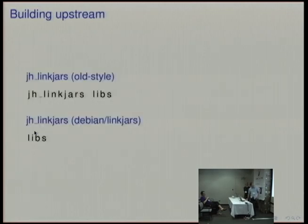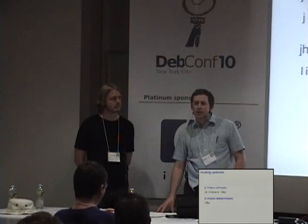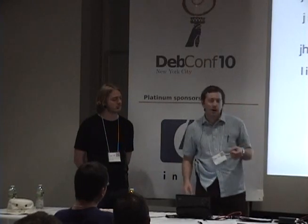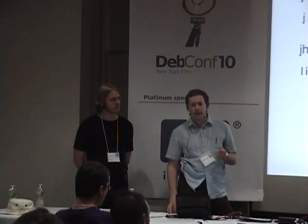The first is jhlinkjars. This basically looks through your list of build dependencies, finds all of the jars contained within them, and symlinks them into the directory where upstream's build system expects to find them. This may give you some extra jars linked in, but hopefully the upstream's build system will ignore any it's not using. You can do this in the normal deb helper style by putting a file in the Debian directory mentioning where you'd like them linked. Java Helper also has a clean command which will automatically remove all of the symlinked jars if they're mentioned in debian/linkjars.